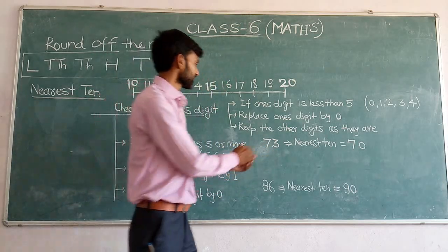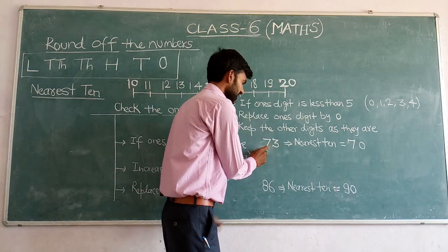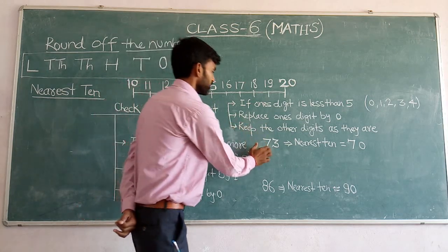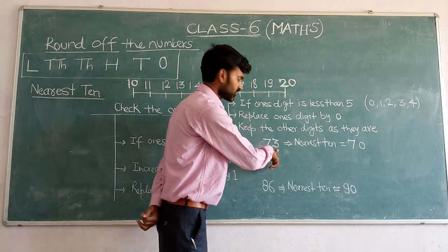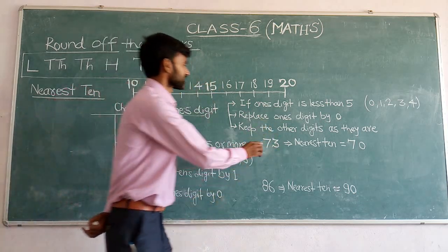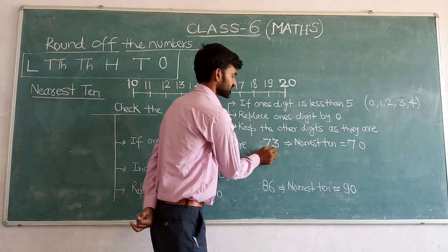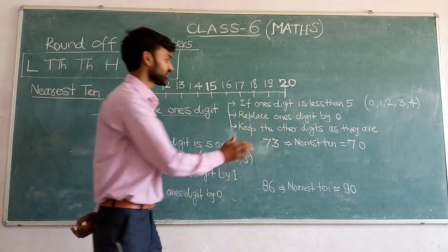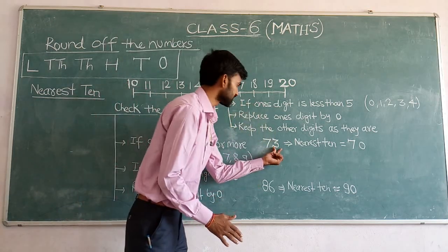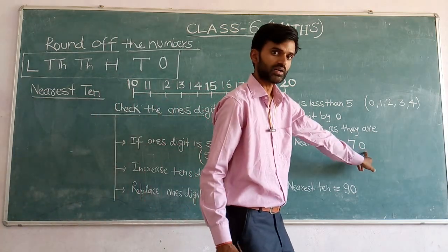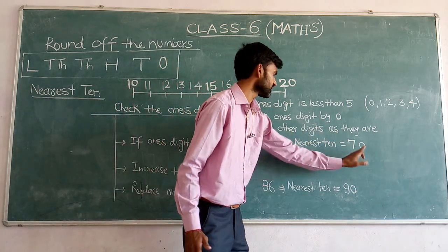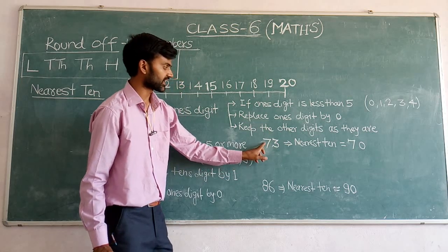For example, the number 73. To find the nearest ten of 73, before the tens place we check the ones place. The digit in the ones place is 3, which is less than five. So, if the ones digit is less than five, replace this digit by 0 and keep the other digits as they are.